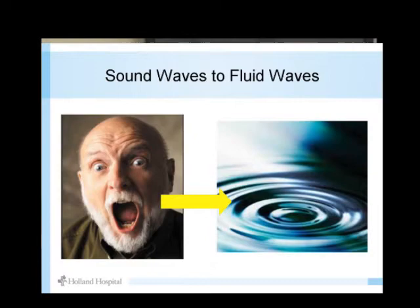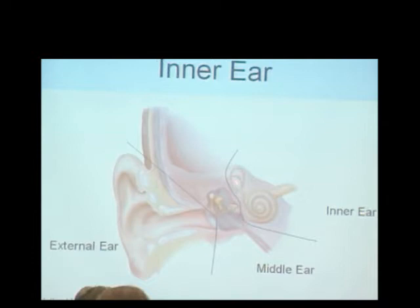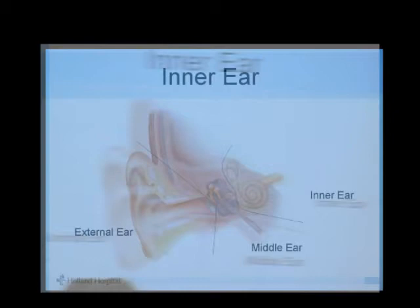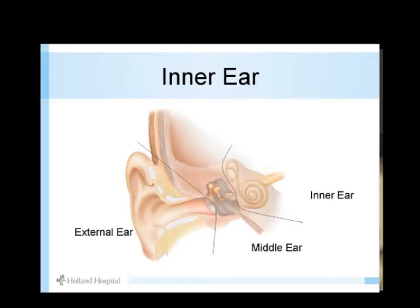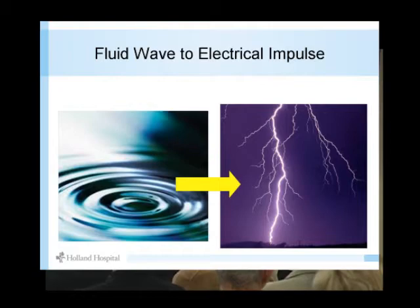Fluid waves aren't how we understand sound either, so that's the purview of the inner ear. The inner ear has two parts: the balance part — the part that gives you vertigo if you're unlucky — and then there's the cochlea, which is the part that turns fluid waves into electrical signals. Electricity is how your brain sends signals around in the neurons, and that's how it turns it into meaning.